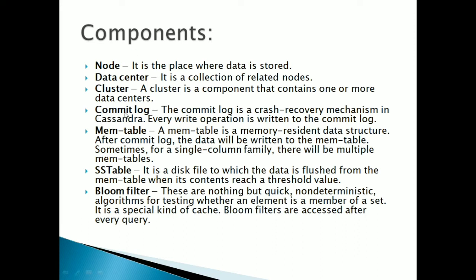The commit log is essentially a store where each write operation's entry is recorded. The memory table is a memory-resident data structure; after a commit log entry, data is written into the memory table. There can be multiple memory tables for a single column family. The SS table is a disk file to which data is flushed from the memory table when its contents reach a threshold value — similar to transferring data from memory to a drive when memory is full.